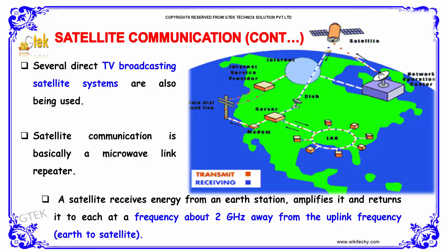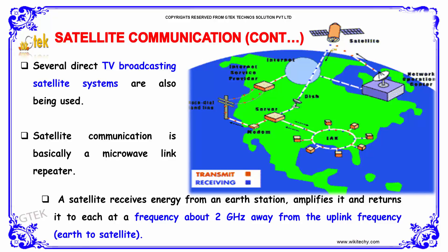Satellite communication is basically a microwave link repeater. A satellite receives energy from an earth station, amplifies it, and returns it to Earth at a frequency about 2 GHz away from the uplink frequency. The path from earth to satellite is called the uplink, and from satellite back to earth is the downlink.